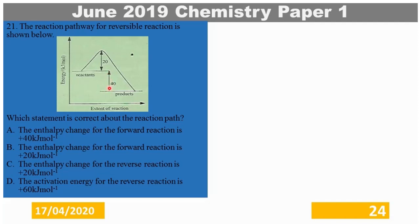Therefore, the enthalpy change of the forward reaction will be minus 40 kJ per mole, since the forward reaction is exothermic. The enthalpy change for the backward reaction will be plus 40 kJ per mole.